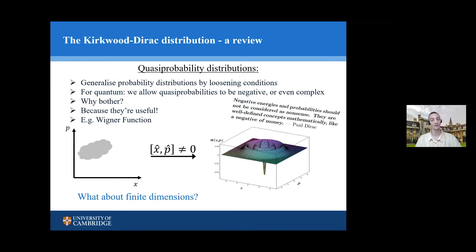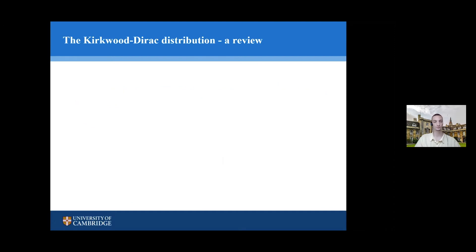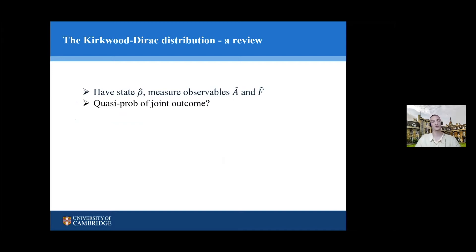We can ask: is there a similar thing we can do for finite dimensions? A particle moving on a one-dimensional line has an infinite-dimensional Hilbert space because it moves on a continuum. But for experiments in quantum information with only finitely many dimensions of Hilbert space, can we do a similar construction when measurement operators don't commute? The setup is roughly as follows: we have a state ρ in some finite-dimensional Hilbert space, some observables A and F, and we want to assign some quasi-probability to the joint outcome of the A and F measurements. We decompose A and F into projectors — it's the projectors that correspond to measurement results.